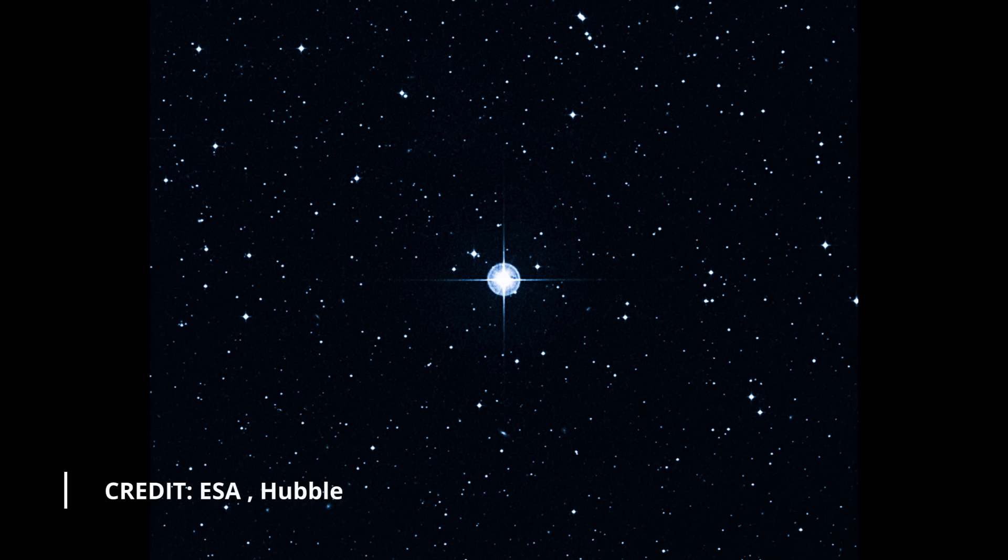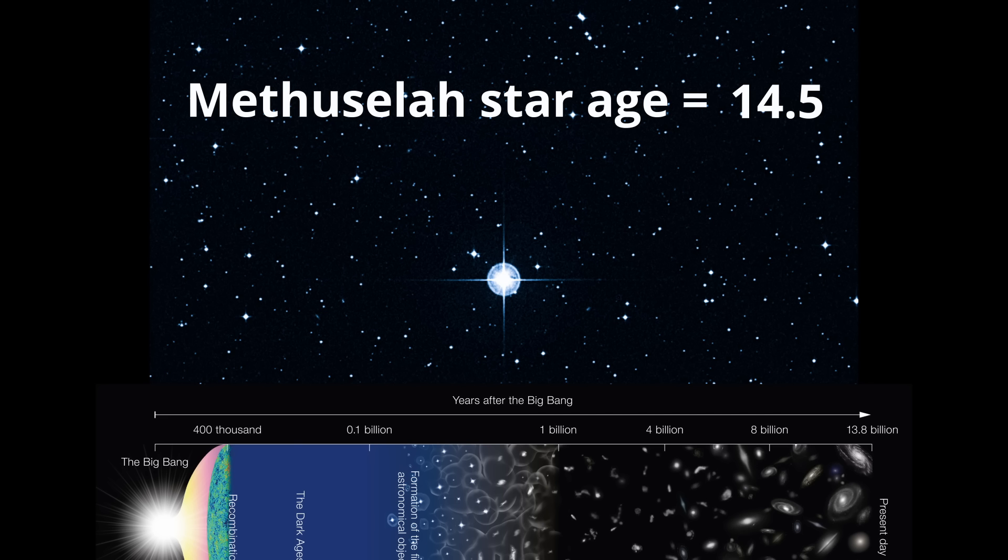Consider the Methuselah star, a metal-poor sub-giant star in the constellation Libra, approximately 200 light years away. Initially estimated to be 14.5 billion years old, its age fell beyond the universe's accepted age window, compelling a downward revision to a more palatable 12 billion years.